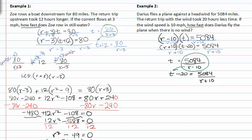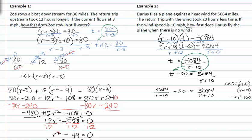Substituting for t, we get five thousand eighty four over r minus ten, minus twenty, equals five thousand eighty four over r plus ten. Our LCD is r plus ten times r minus ten, which is also r squared minus one hundred. After distributing the LCD, we get five thousand eighty four times r plus ten, minus twenty times r squared minus one hundred, equals five thousand eighty four times r minus ten.